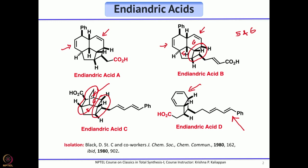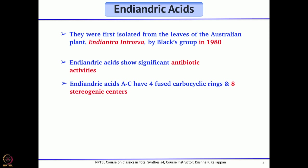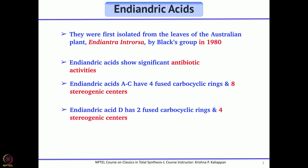To support that, if you look at endiandric acid D, you can already see a diene with two double bonds. One of the double bonds can act as a dienophile, or this can act as a diene and the other acts as a dienophile. From a biological activity standpoint, they show very good antibiotic activity, and structurally they have four fused rings with eight stereogenic centers, though they were isolated as racemates.